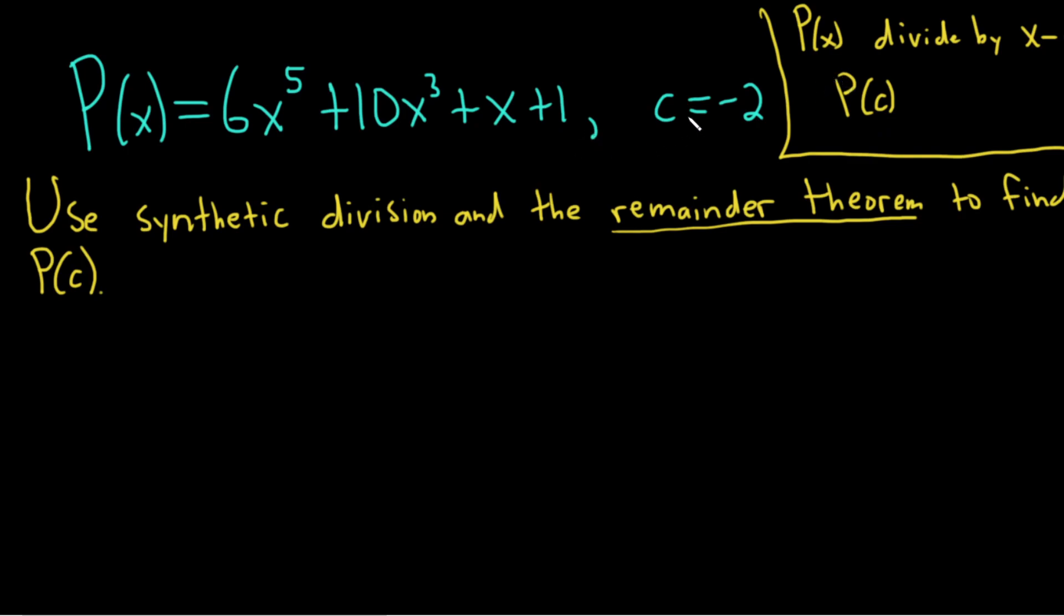So in this case, c is negative 2, so we're basically going to divide by x minus c. In other words, we're dividing by x minus negative 2, so we're dividing by x plus 2. And so we have two ways of doing that. We can use long division, or we can use what's called synthetic division. Actually, the question says to use synthetic, so we should use synthetic. Let's do it that way.